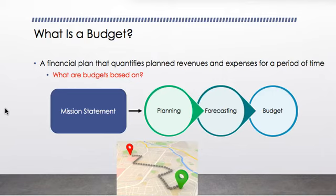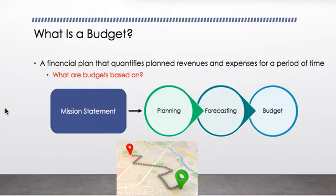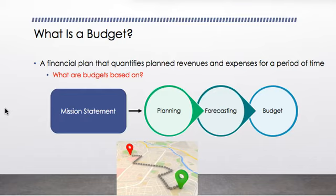So what is a budget? We've all heard the term and probably have a basic understanding, but let's dig a little bit deeper. A budget is a financial plan that quantifies planned revenues and expenses for a period of time. The big thing that stands out is those first three words: a financial plan. A good budget is a good financial plan — it considers a number of factors and is simply a plan or a path forward to identify planned revenues and expenses for a specific period of time.